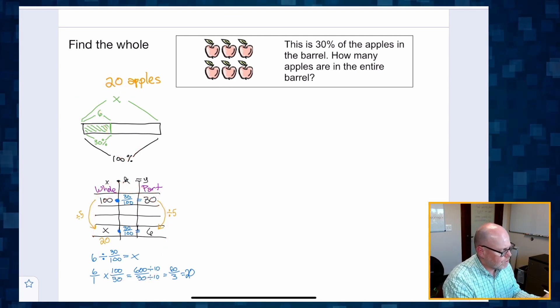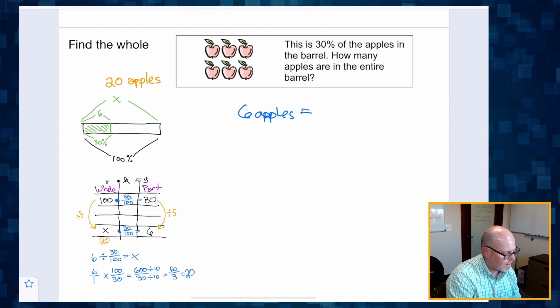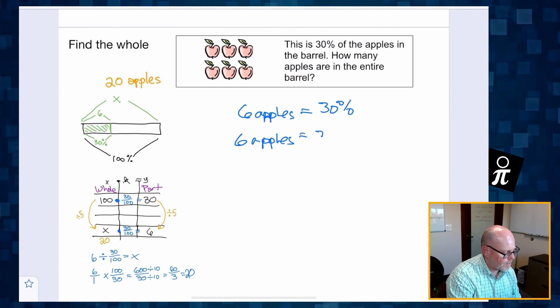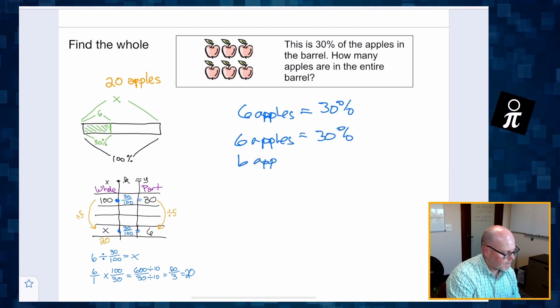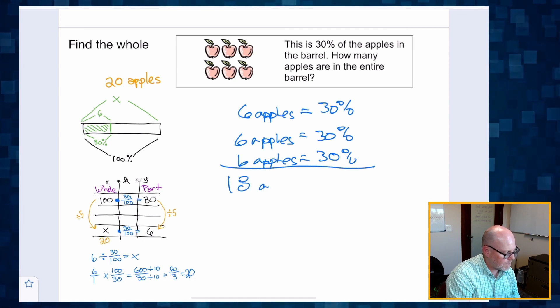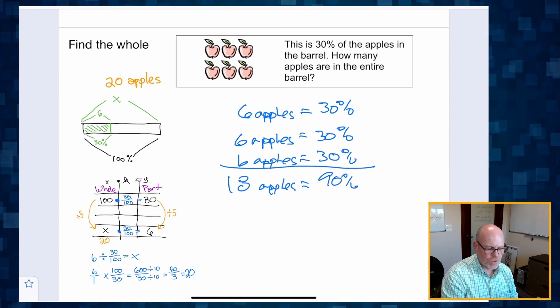These students might have said, well, if six apples is 30, then another six apples is another 30. And then another six apples is another 30. So, so far that gives us 18 apples is 90%.